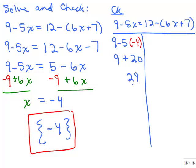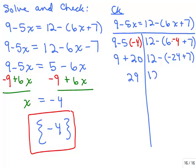We evaluated the left side to get 29. Now let's see the right side: 12 minus 6 times negative 4, plus 7. We're going to work inside the parentheses. Don't use the distributive property when you check — if you made a mistake distributing while solving, you're likely to repeat the same mistake when checking.